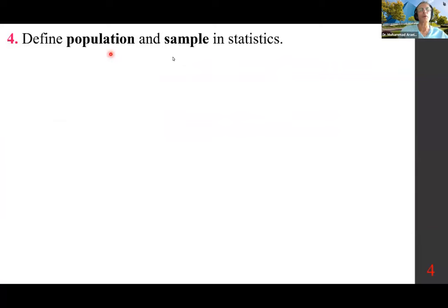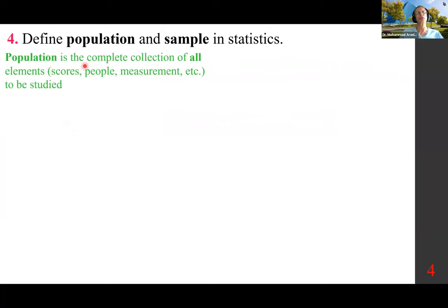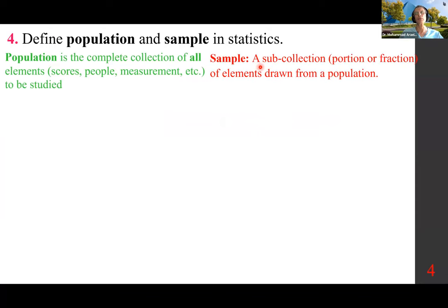Let us define population and sample in statistics. Population is the complete collection of all elements — scores, people, measurements, etc. — to be studied. A sample is a sub-collection, portion, or fraction of elements drawn from a population.